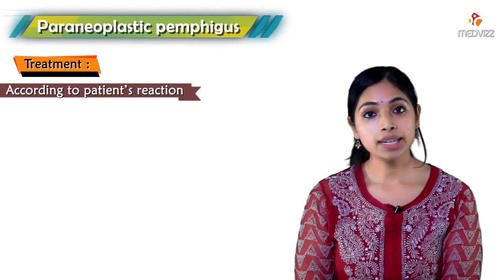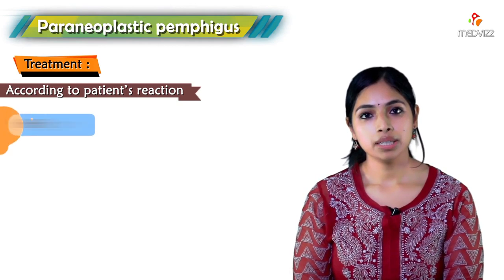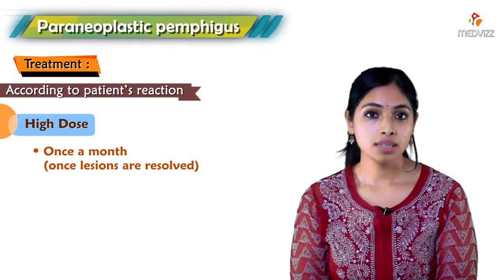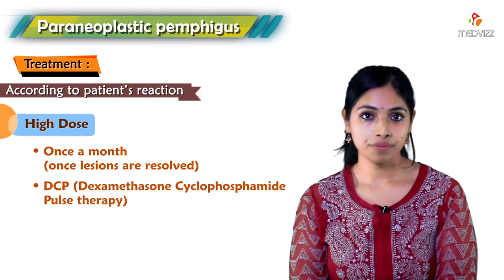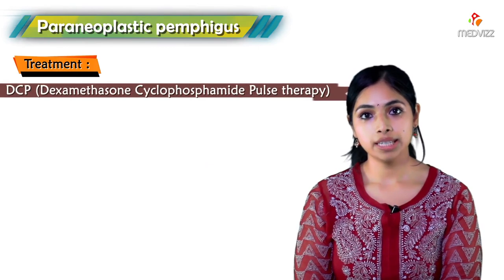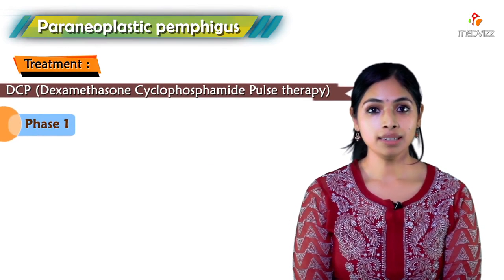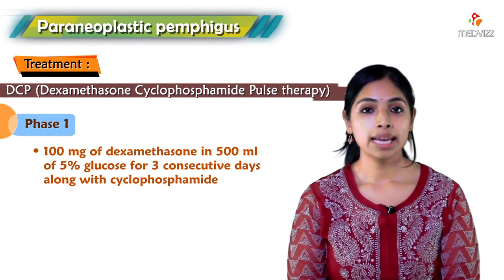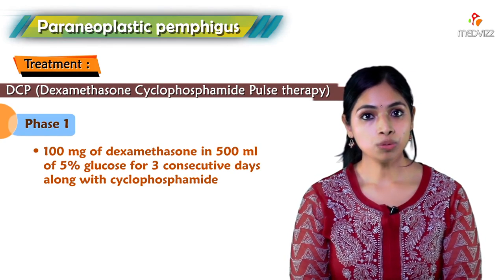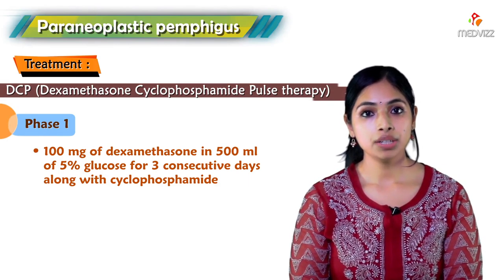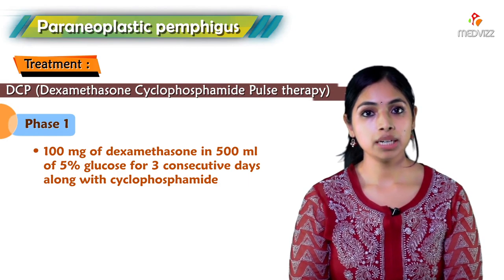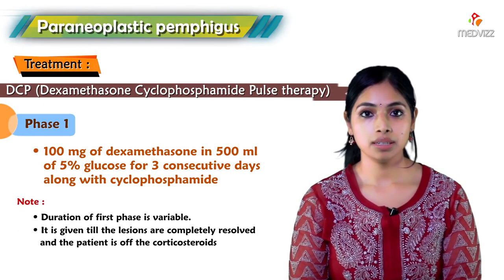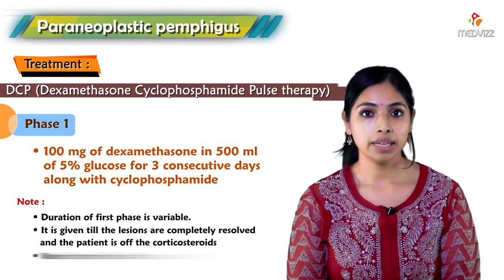To avoid daily high-dose steroids, we can give high-dose steroids once a month — known as DCP, or dexamethasone-cyclophosphamide pulse therapy. In DCP phase 1, 100 mg of dexamethasone IV is mixed in 500 ml of 5% dextrose and given for three consecutive days. On day 2, 500 mg of cyclophosphamide is added, and the patient also takes oral cyclophosphamide 50 mg daily. Phase 1 continues until lesions are completely resolved and the patient is off corticosteroids.